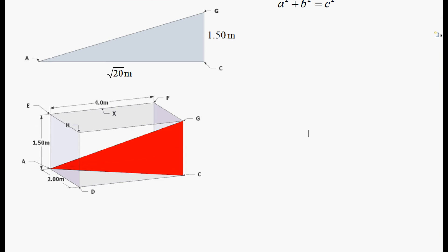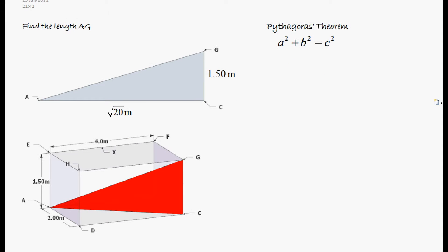So let's go and do the question. So here we go, here we have our triangle A, G, C, and we're going to use Pythagoras' theorem again.